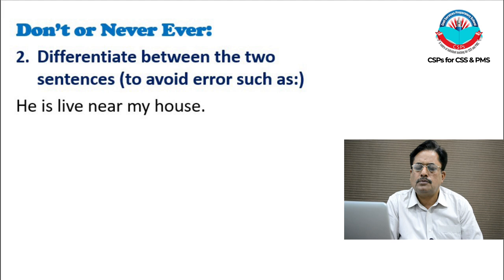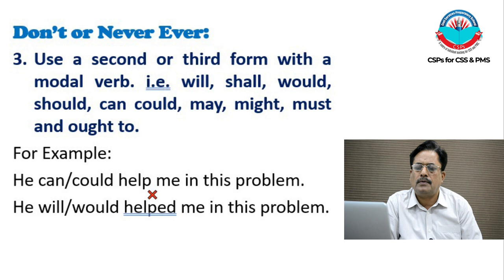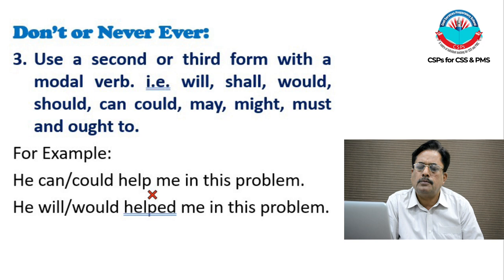The next error: never ever use a second or third form with a modal verb — that is, will, shall, would, should, can, could, may, might, must, and ought to. We are always supposed to use the first form with all these modal verbs. For example, 'he can or could help me with this problem' is correct. We should never say 'he will or would helped me in this problem.'